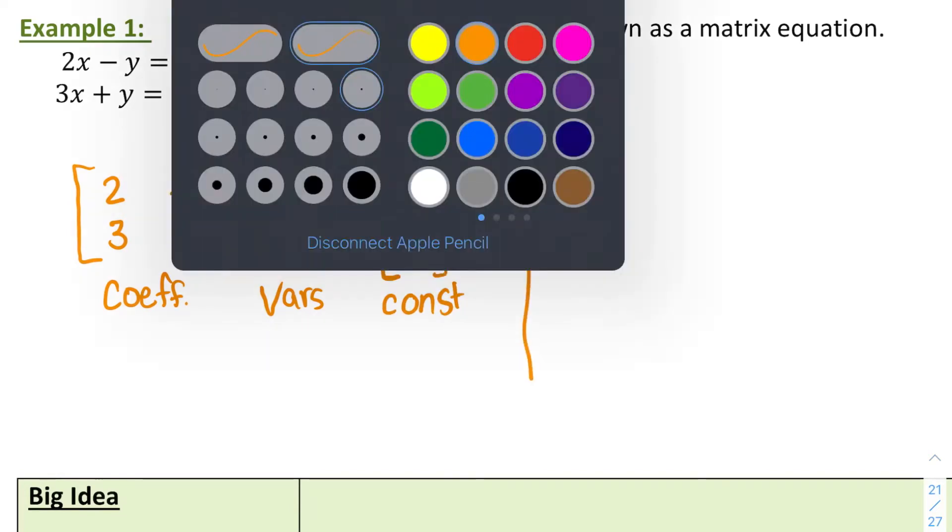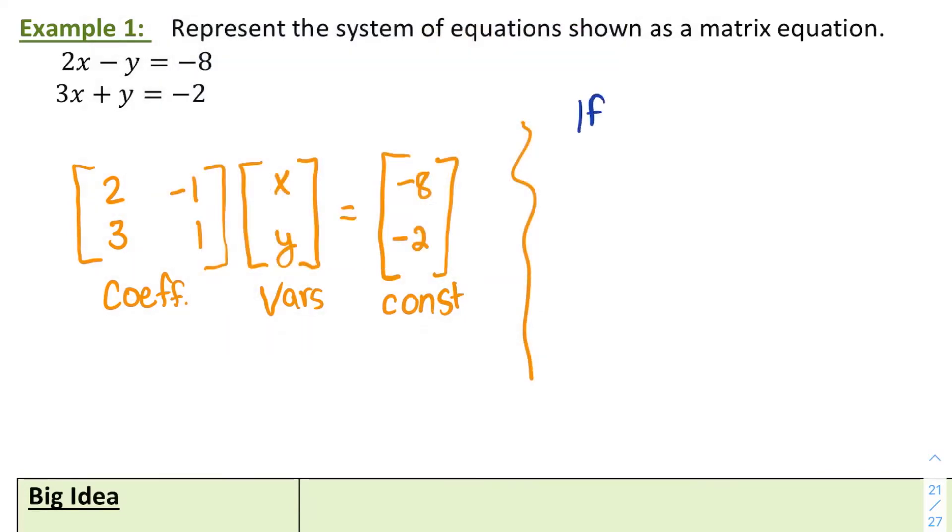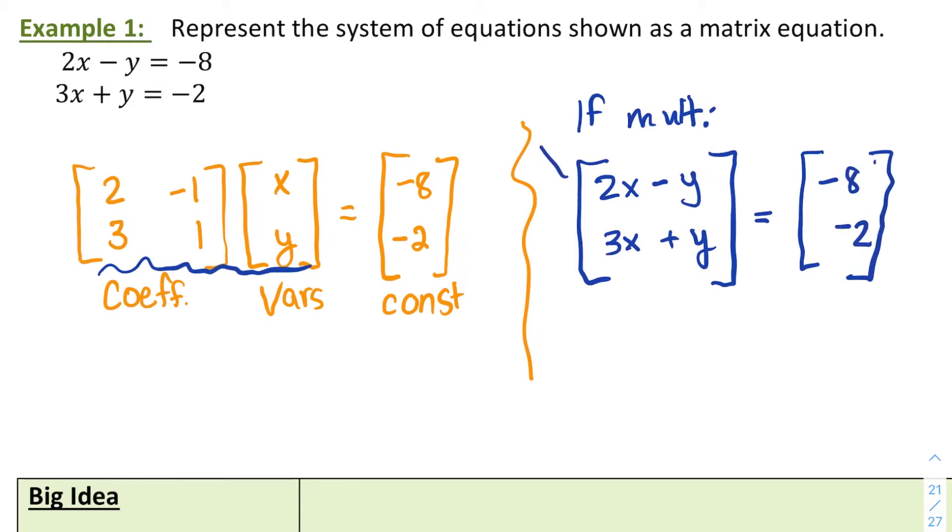That does represent my system of equations, but let's see why. So kind of like in our warm-up, if you actually multiplied the coefficient matrix and the matrix containing your variables together, you'd get 2x minus y, and then 3x plus y, being equal to your constants of negative 8 and negative 2. So row 1 represents your first equation, and row 2 represents your second equation.